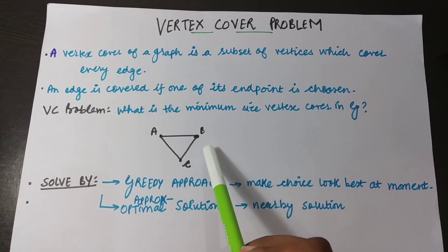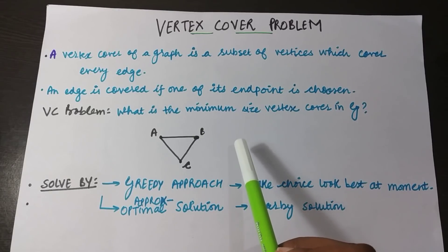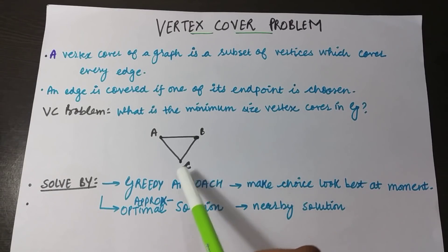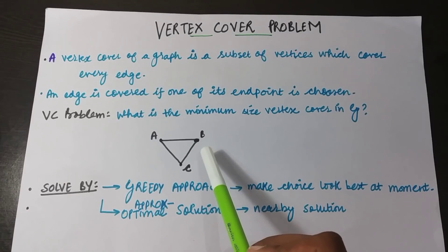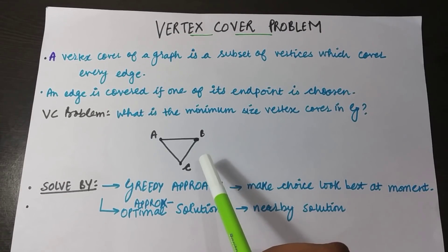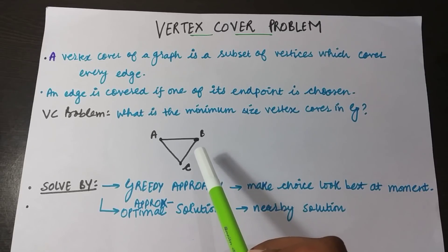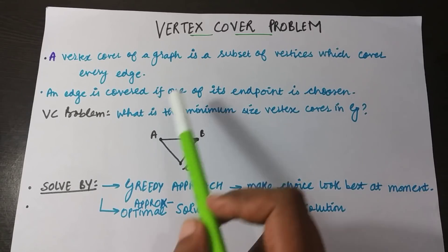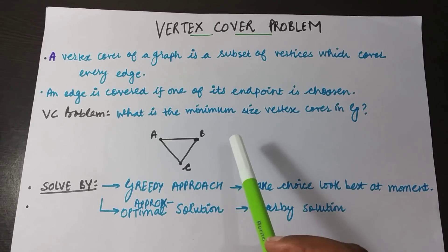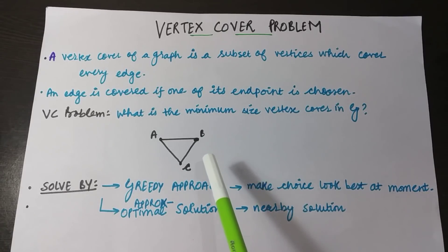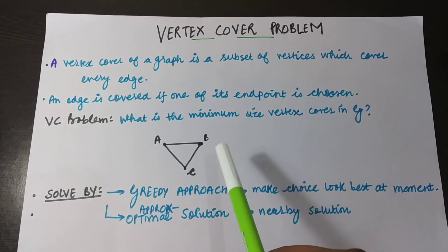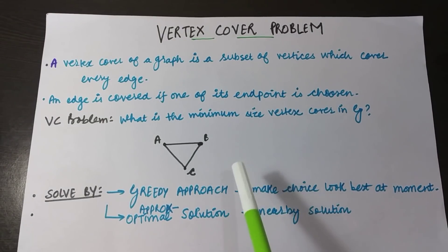Edge BC is said to be covered only if either of its endpoints B or C are chosen, or both are chosen. So in short, we have to figure out a set of vertices from a graph such that choosing them covers all the edges of that graph.